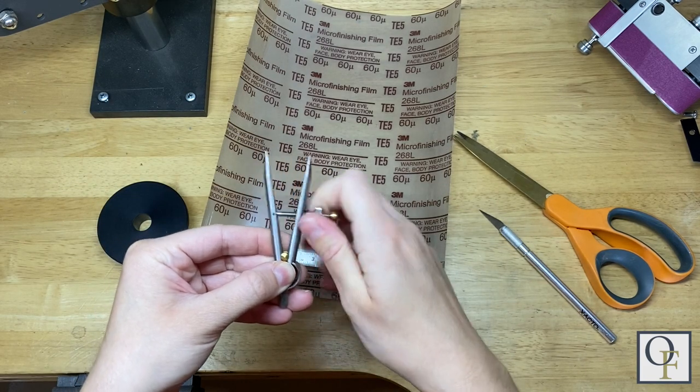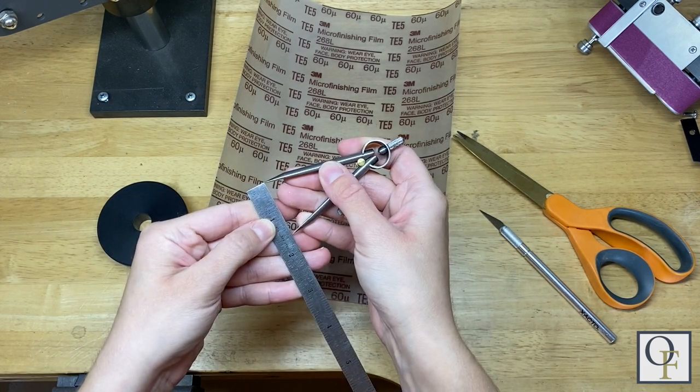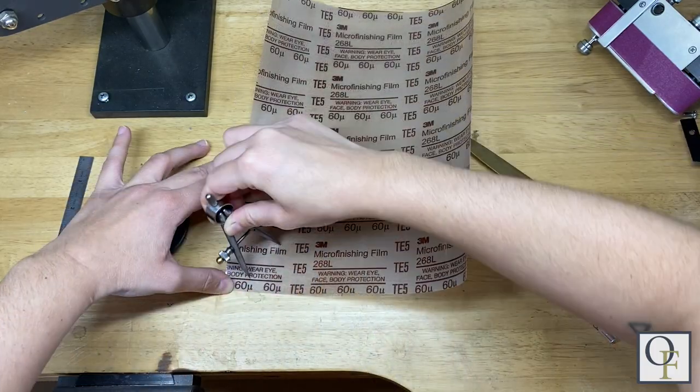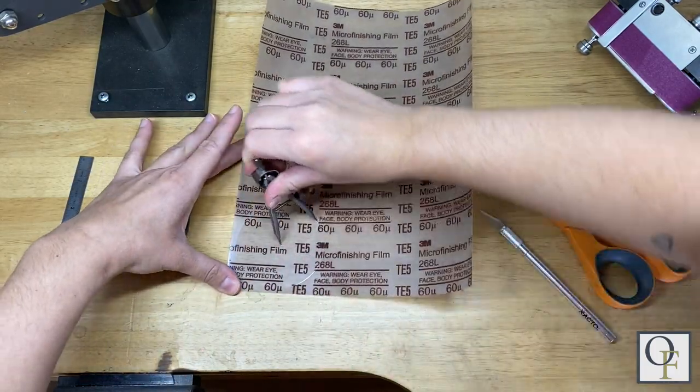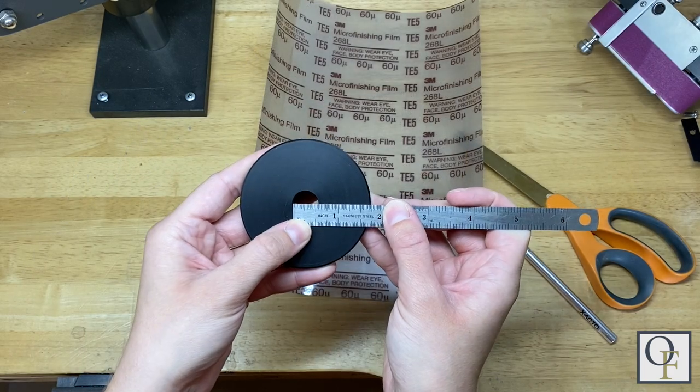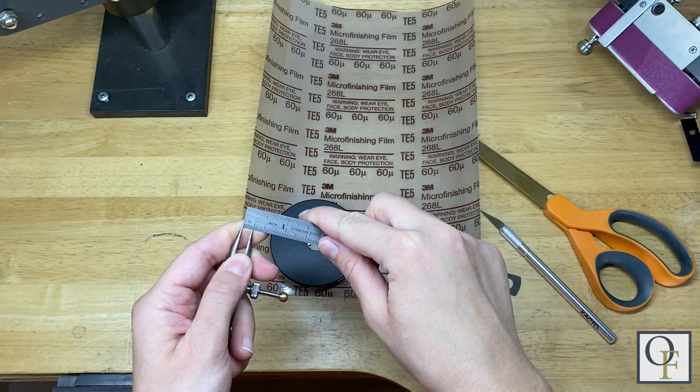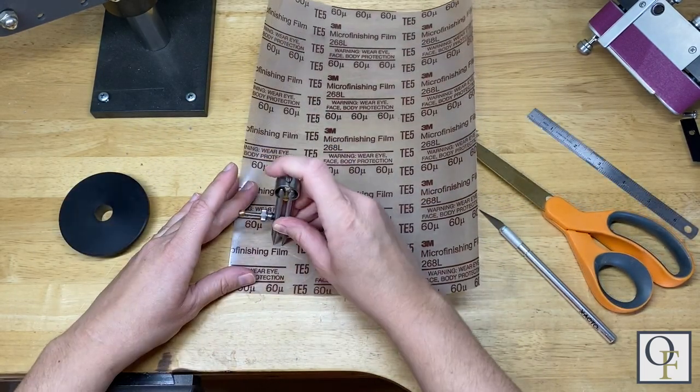Pre-cut sanding sheets will be available in the future but for now we'll have to cut our own which is pretty quick and easy. Here's how. The easiest and most consistent way to cut the 3 inch disc with a half inch hole is to score the sheet with dividers before cutting with scissors.